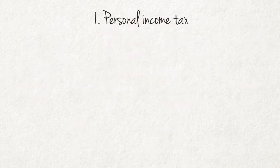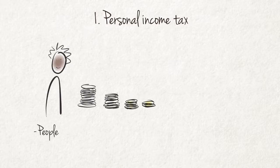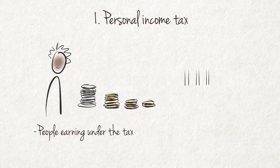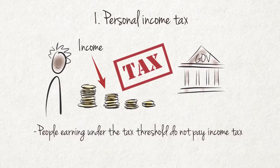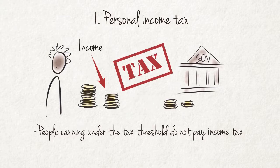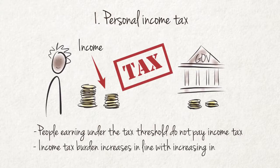Personal income tax is paid on income earned. People earning income under the tax threshold — during 2015 the tax threshold was equal to a taxable income of R73,650 — do not pay income tax. But all annual income earned above the threshold is subject to tax. South Africa has a system of progressive income tax, meaning that the personal income tax burden increases in line with increasing income.